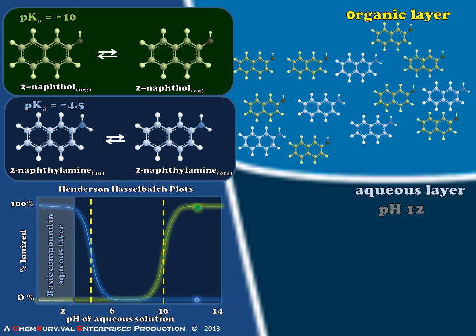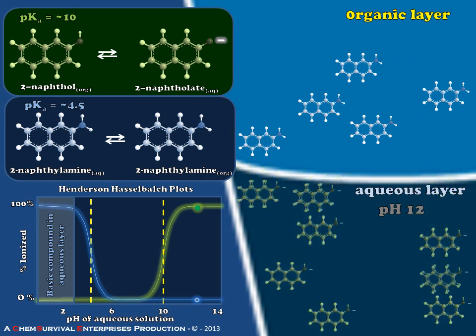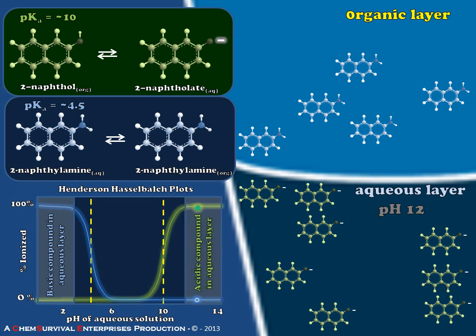If we move even further into the basic region of the plot, what we notice is that we cross the pKa value of naphthol, meaning that it's going to become soluble as naphthalate in water. So once again, we have an extraction that we expect to have a very good chance of working.